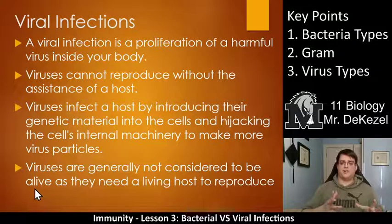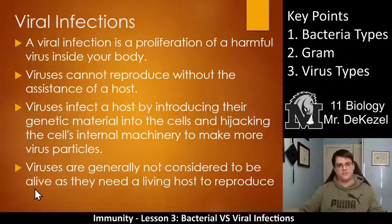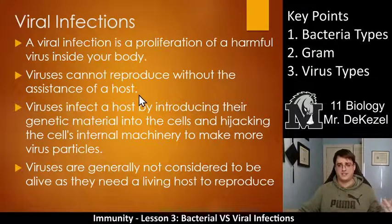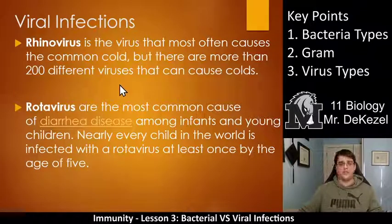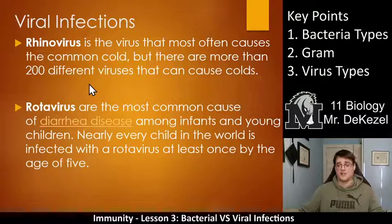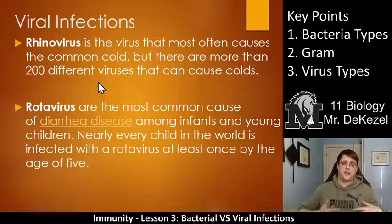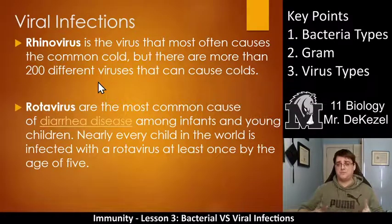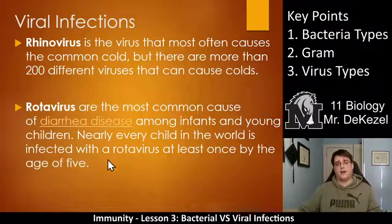Viruses are not unicellular — they are different. They are just packages of DNA or RNA that do a specific job: produce more of themselves. There are different types of viruses. Rhinoviruses are the type most often causing the common cold, but there are about 200 different rhinoviruses that can cause colds, making it very difficult to develop a vaccine against them.